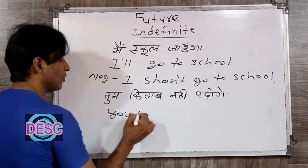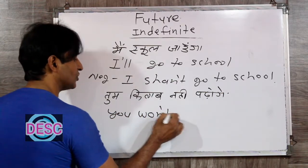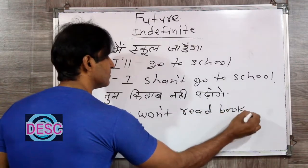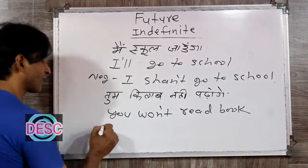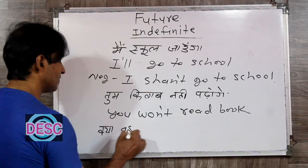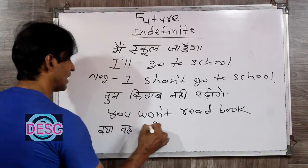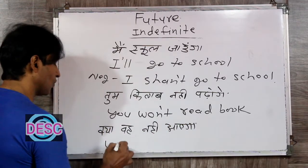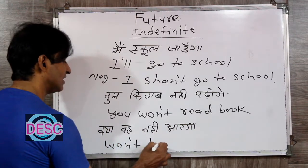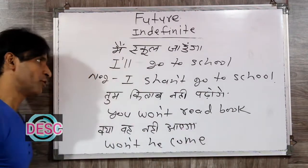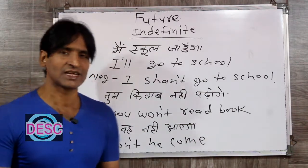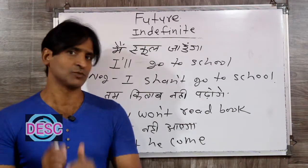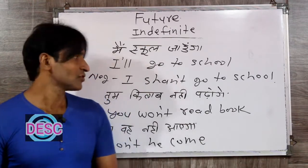'Tum kitaab nahi padhoge' — You won't read the book. 'Kya woh nahi aayega?' — Won't he come? In spoken language we mostly use short forms — shall not becomes shan't, and will not becomes won't. Okay friends, that's all for today.